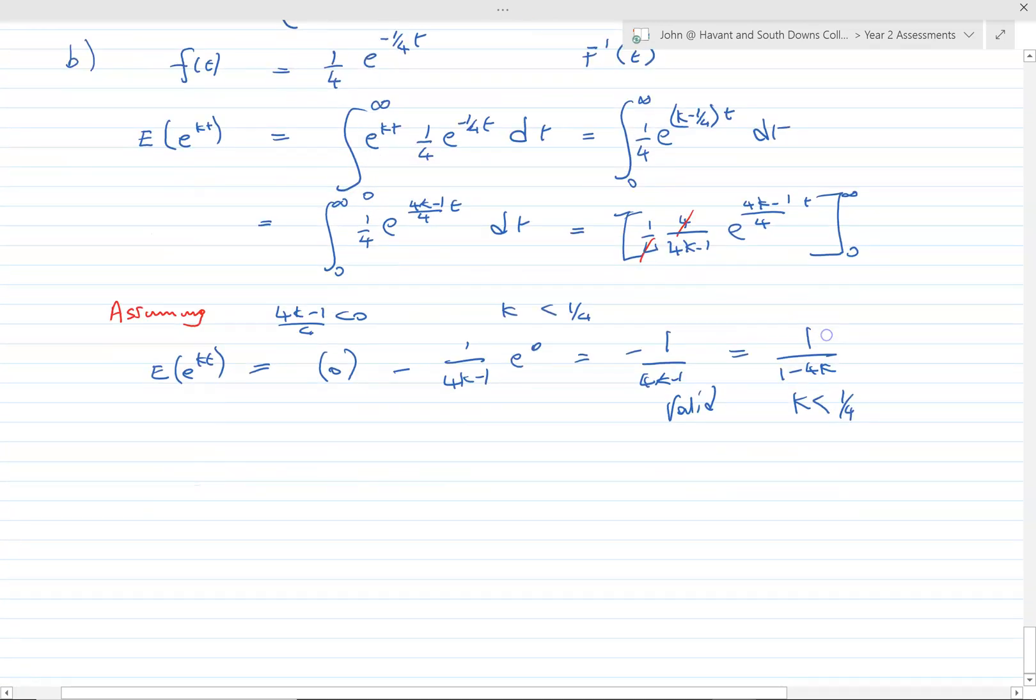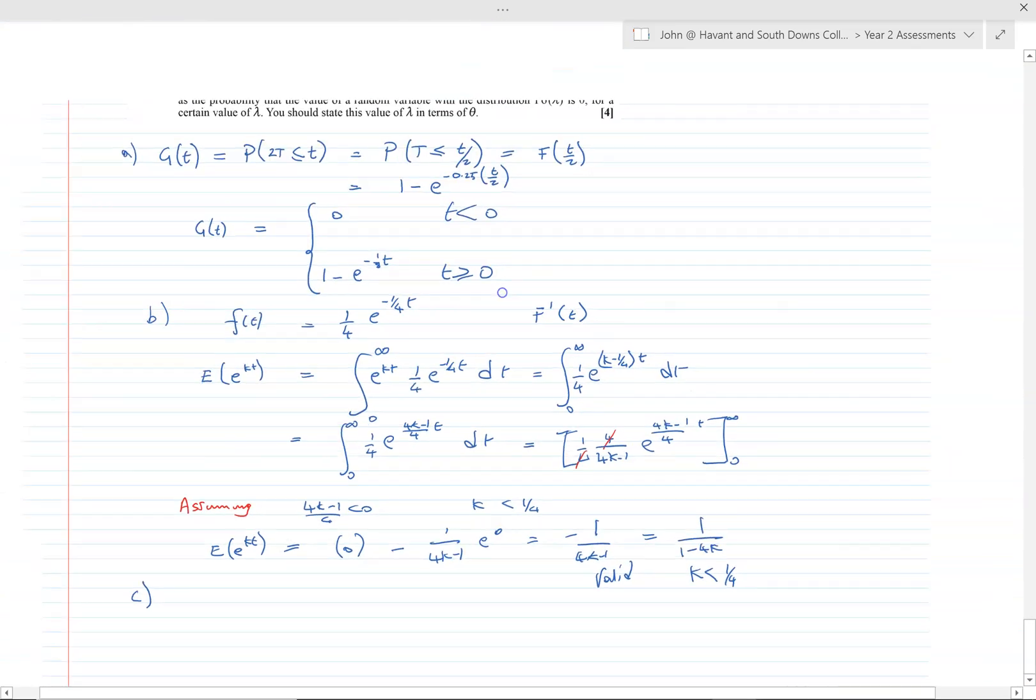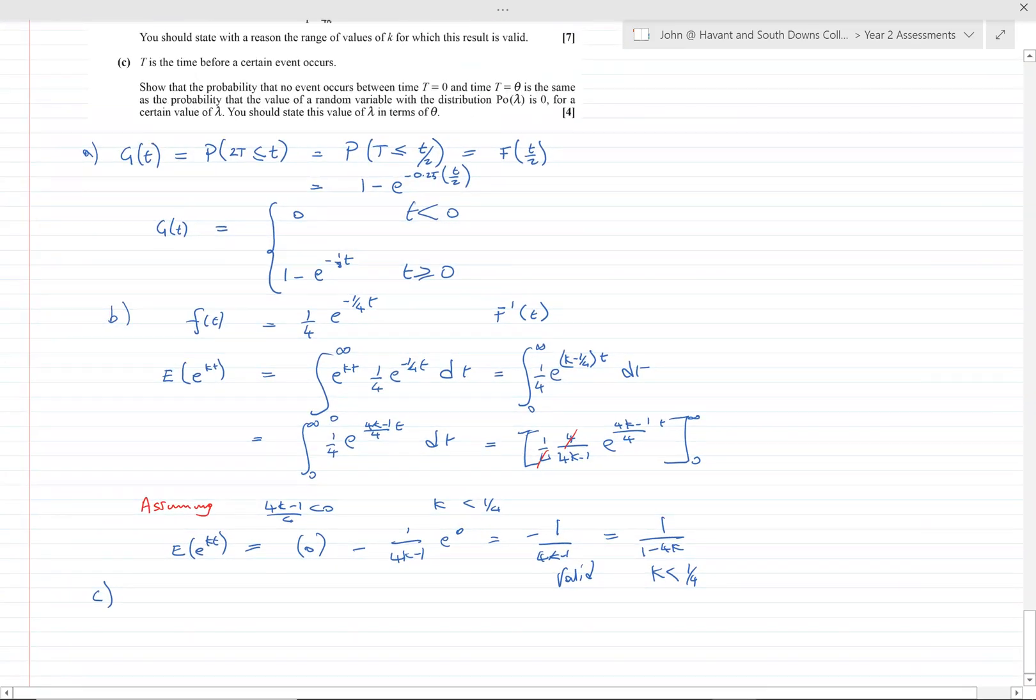Part C, it's all about the exponential distribution, finding the time interval within a Poisson process. There's a connection between the Poisson and the exponential, and it can be a little bit confusing to convert from one to the other, but in this particular case it's not too bad because it's a specific case.